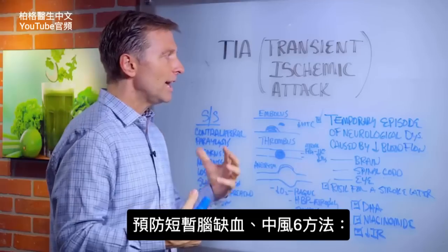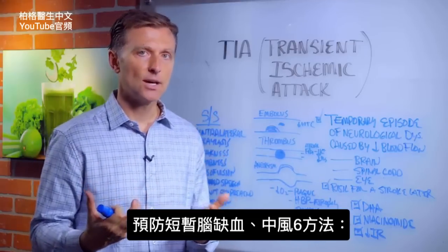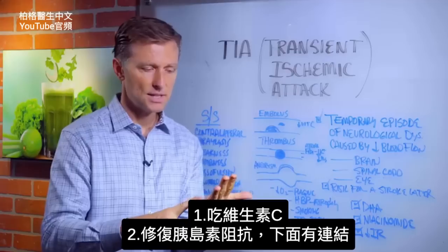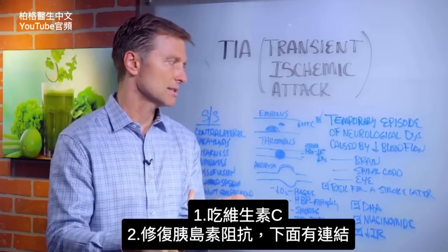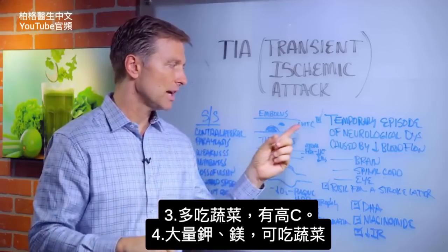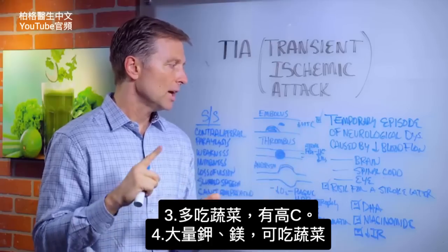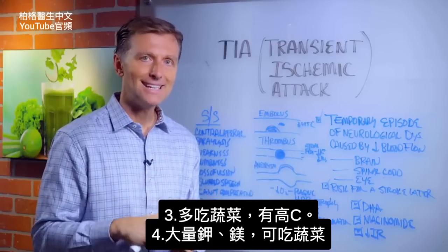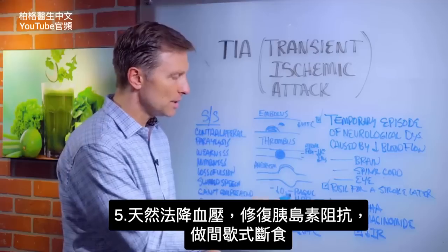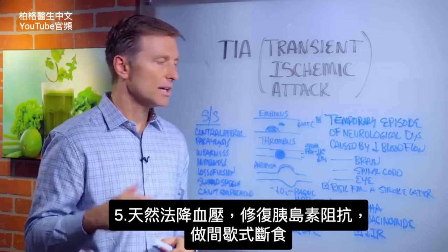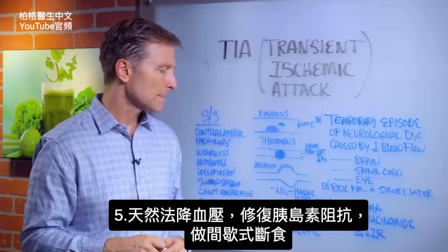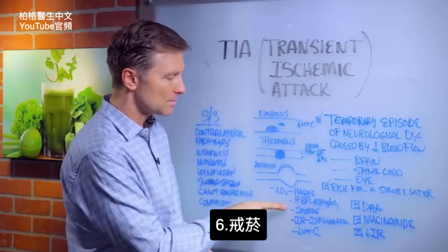To prevent a TIA or stroke: you need vitamin C and need to fix insulin resistance. Eat lots of vegetables high in vitamin C, potassium, and magnesium. Decrease blood pressure naturally using techniques for insulin resistance and intermittent fasting. And stop smoking.